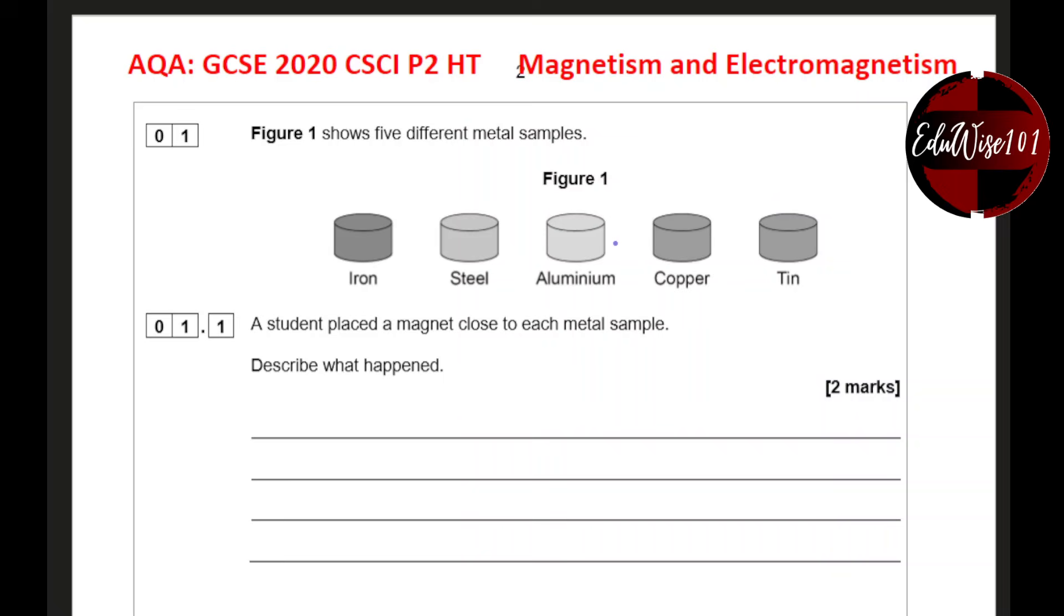Now iron and steel are magnetic materials. These three are not magnetic. Now there's only four metals that are magnetic. Along with iron and steel, nickel and cobalt are also magnetic. So describe what happens. If you bring a magnet close to iron and steel, they will be attracted. And if you bring a magnet close to aluminium, copper and tin, nothing will happen. They won't be attracted.